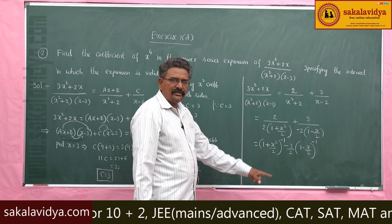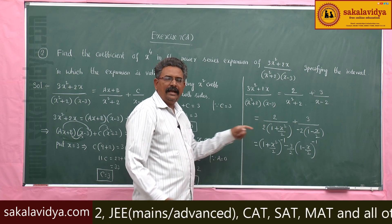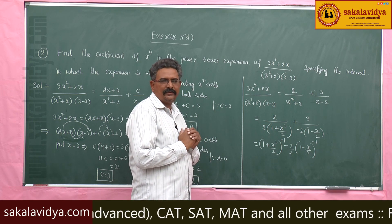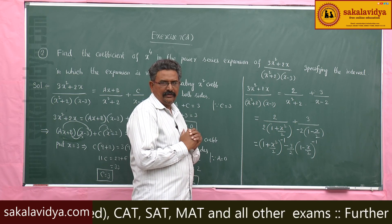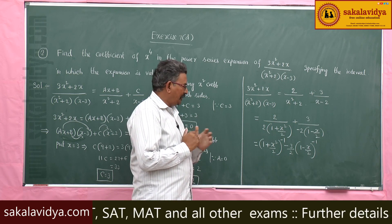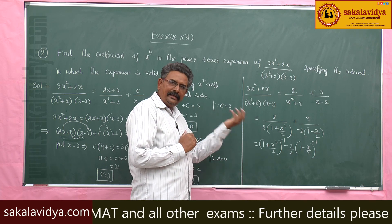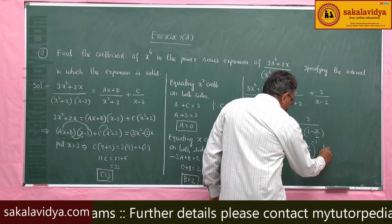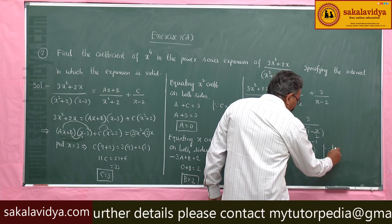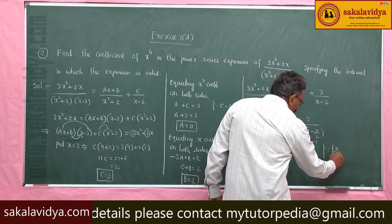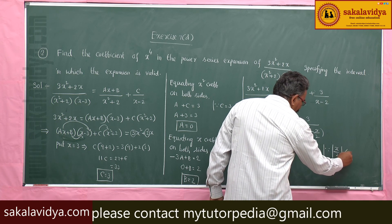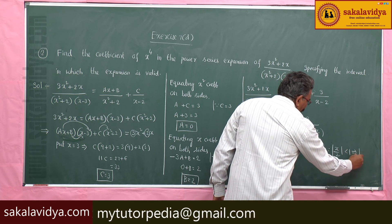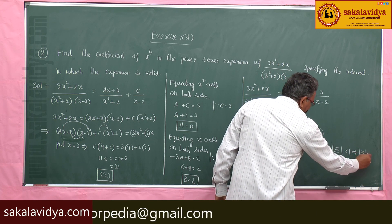These expansions are valid — that is also part of the question. They are valid if and only if |x/2| < 1, which implies |x| < 2.